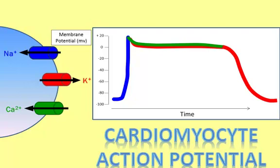At rest, the cardiomyocyte has a charge across the membrane of negative 90 millivolts, with the inside of the cell negative relative to the outside. This is called the resting membrane potential.